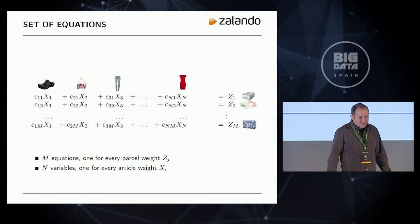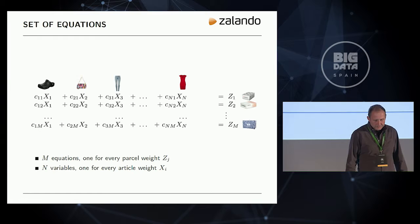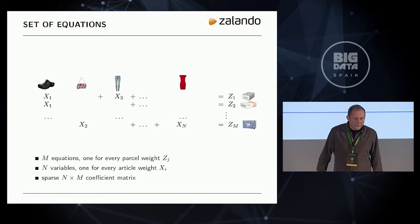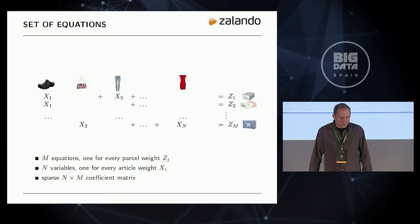At first glance, this looks like a set of linear equations. We have our articles as unknowns — n articles in this example — and we have m equations, one for every parcel that has been shipped out. Moreover, the coefficients of this set of equations are sparse, since most parcels contain only one or a few items, not all of them. Pretty nice: a sparse linear set of equations.